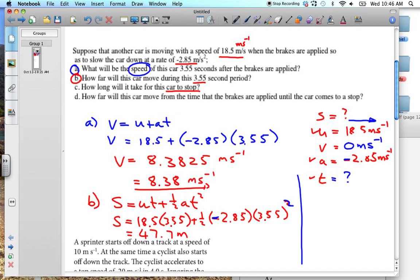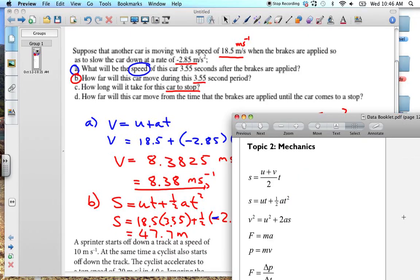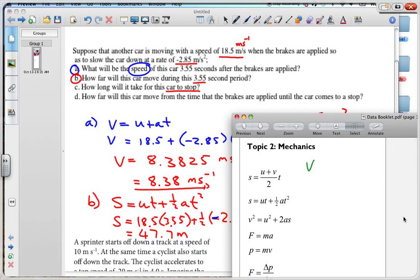So here we want to find the time. We have got U, we've got V, we've got A, and we've got T, but we don't have S. So we'd want to use a formula that doesn't use S. All these formulas use S. We'd use the one that we've been using, V is equal to U plus AT. But here we'd change the formula around to be T is equal to V minus U over A.